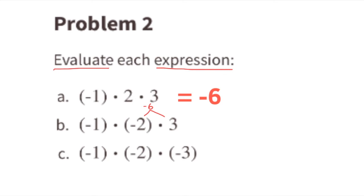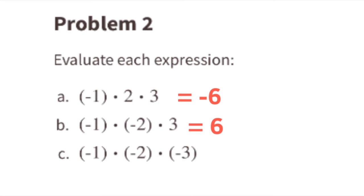Part B: negative 1 times negative 2 times negative 6. We multiply negative 2 times negative 6 to get positive 12... wait — negative 2 times negative 6 gives positive 12, but here negative 2 times 3 gives negative 6, and then negative 1 times negative 6 — a negative times a negative equals a positive. So the value is positive 6.